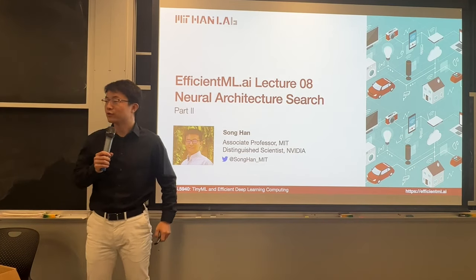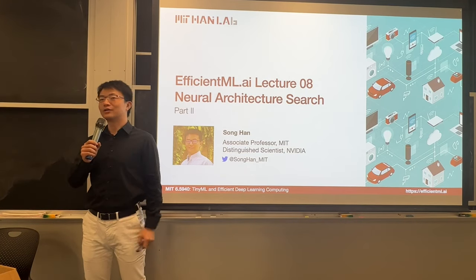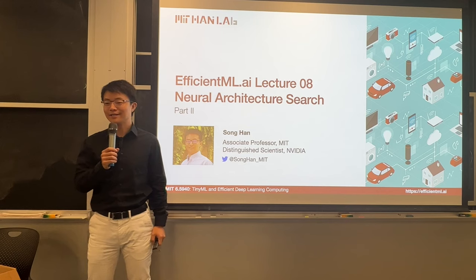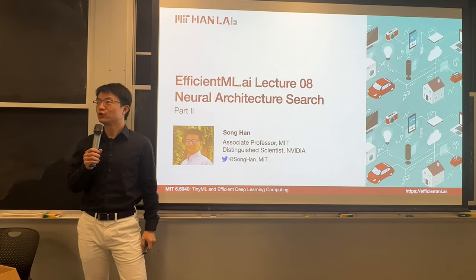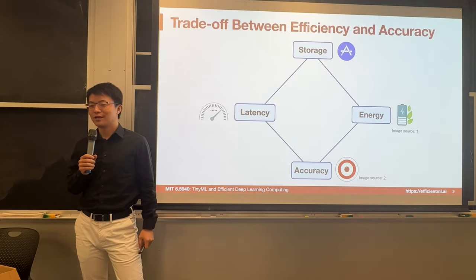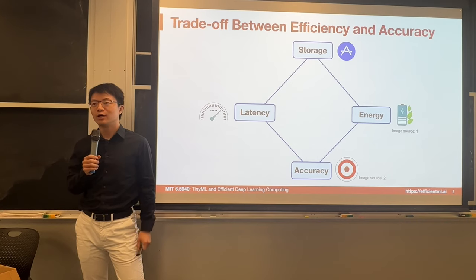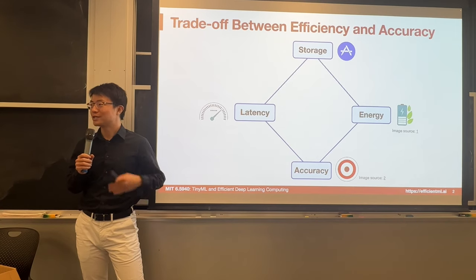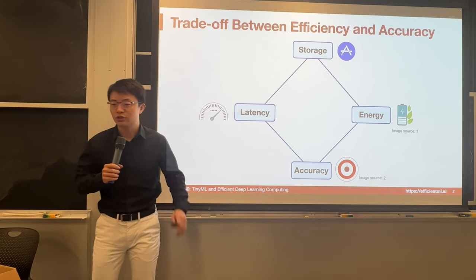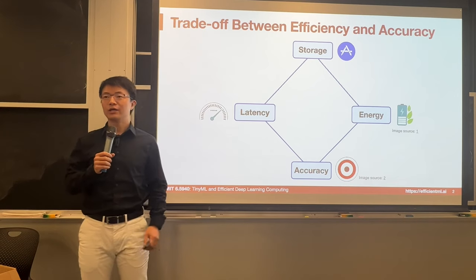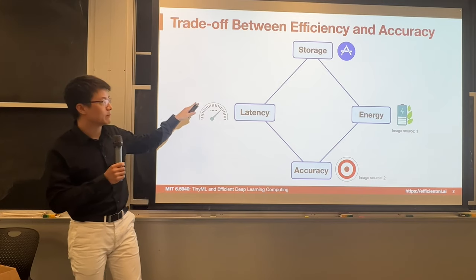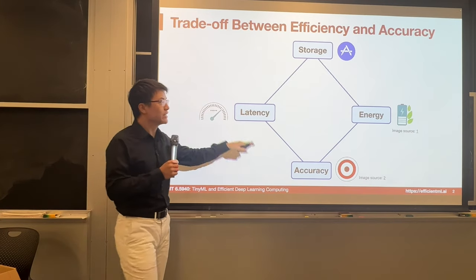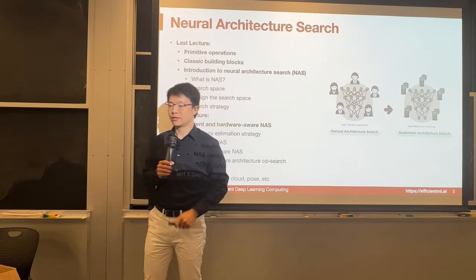Welcome to EfficientML.ai Lecture 8. We are going to talk about the second part of Neural Architecture Search. In the last lecture, we talked about part one of Neural Architecture Search — the core idea being there's no free lunch. We want to get a good architecture that achieves a good trade-off between accuracy, energy, and storage.